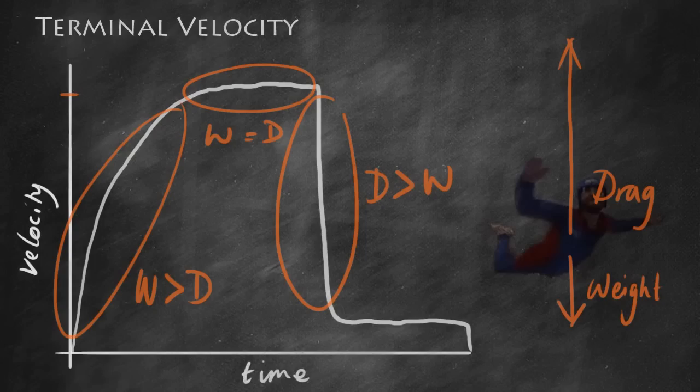As we decelerate, gradually drag gets less and less until once more we've got a situation where the two forces are equal. Therefore, you've got a new situation, a new much lower constant velocity, a new much lower terminal velocity. Once more, this is the situation where the weight is equal to the drag. So therefore, there's no acceleration.